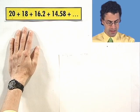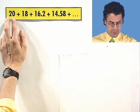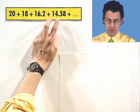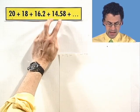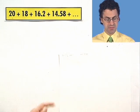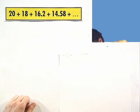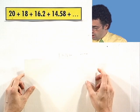So here, we're given a geometric series: 20 plus 18 plus 16.2 plus 14.58, and you can see the numbers are falling, so this means that the ratio is going to be, hopefully, less than 1 in absolute value.